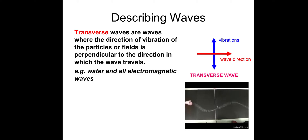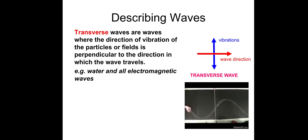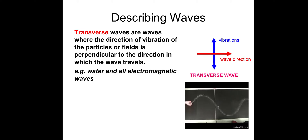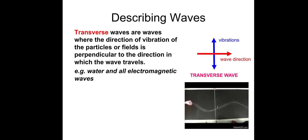A transverse wave: transverse waves are waves where the direction of vibration of particles or fields is perpendicular to the direction in which the wave travels. There's an example using a slinky — the person's hand is moving up and down, and the wave direction is perpendicular, moving to the right. So the vibrations and the wave direction are perpendicular to each other, at 90 degrees.